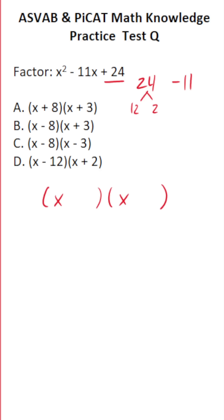For example, 12 and 2, negative 12 and negative 2, 8 and 3, and negative 8, negative 3, 6 and 4, and so on and so forth.